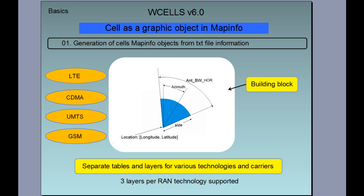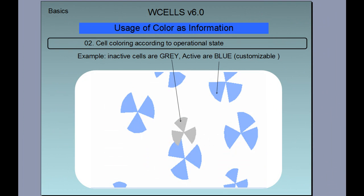W cells support separate tables and layers for various technologies and carriers. LTE, CDMA, UMTS, and GSM are supported, and we can generate up to three layers per run technology. It's possible to color individual cells according to operational state — for example, inactive cells can be colored gray and active cells can be colored blue. This is the default, and the user can change the preferred colors.